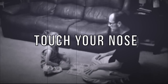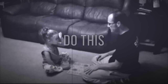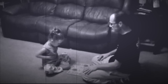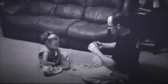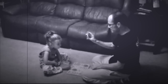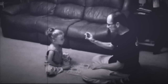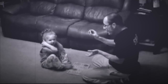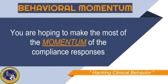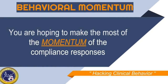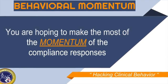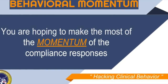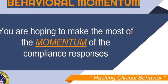You would issue three or four of those high-probability requests, the learner demonstrates compliance with each of them, and then you would issue the low-probability request. You do not want too much time between the high-probability requests and the low-probability request. A brief inter-response time between requests is crucial in order to capitalize on the high-P requests functioning as discriminative stimuli for previously reinforced behaviors.